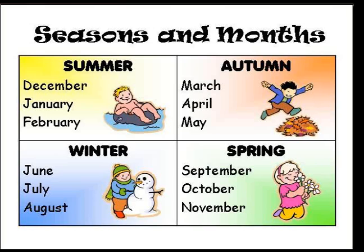And all of February. After summer comes autumn. Autumn begins on the first of March and runs through March, April, and May. On the first of June we begin winter, and that runs through June, July, and August. Spring begins